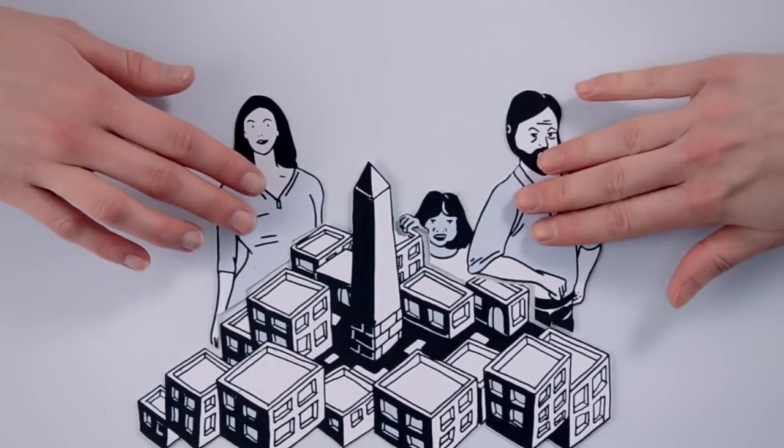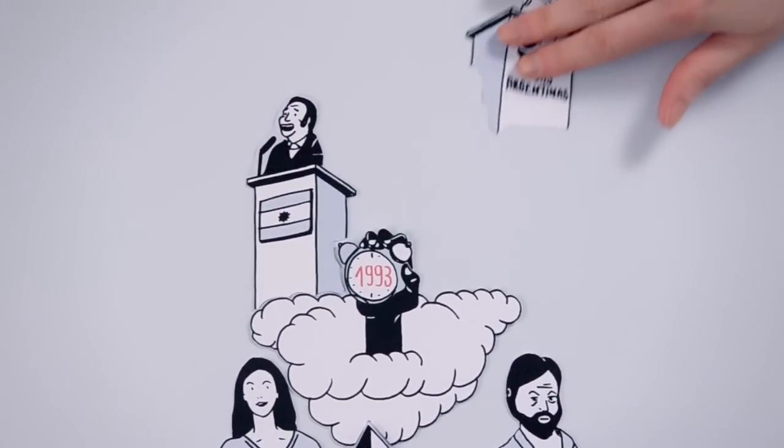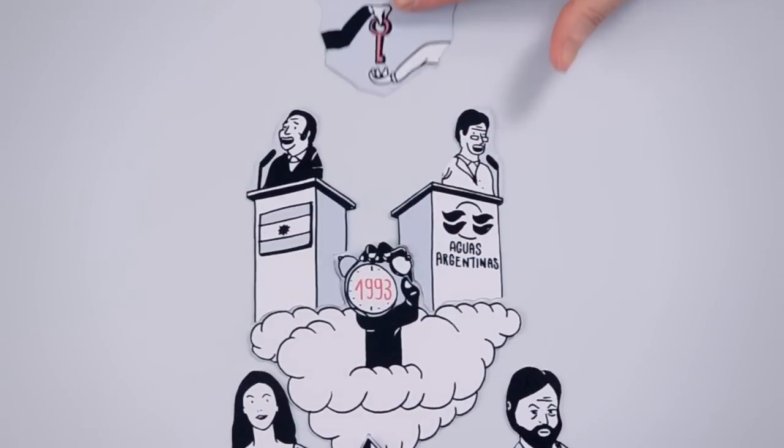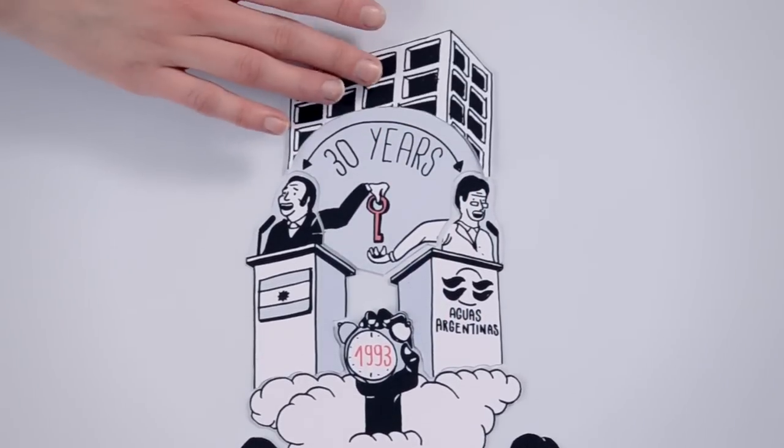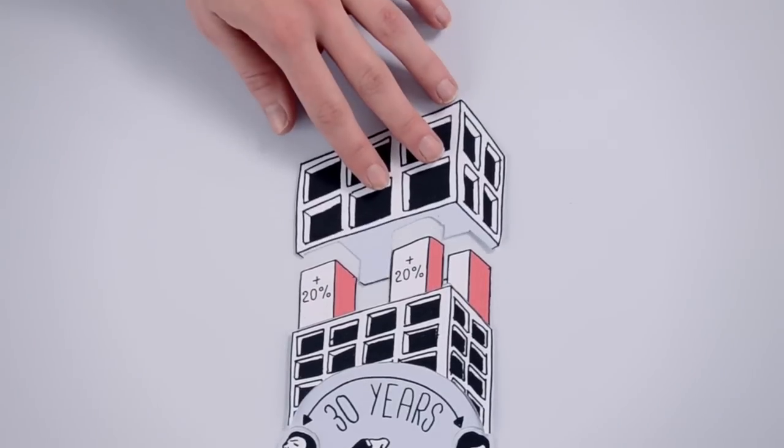Take Buenos Aires. In 1993, the government granted a 30-year concession to a subsidiary of French water company Suez. The private company's profits soared, even as it failed to comply with its contract.